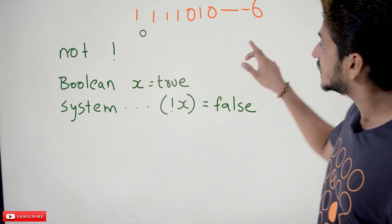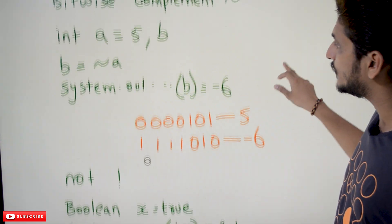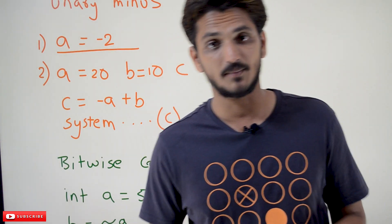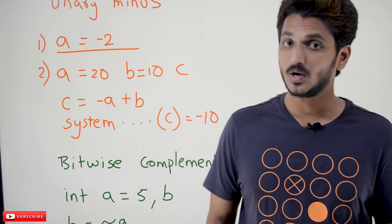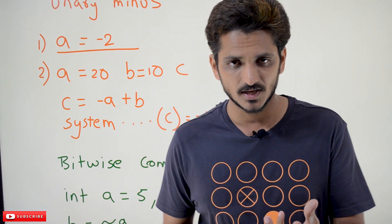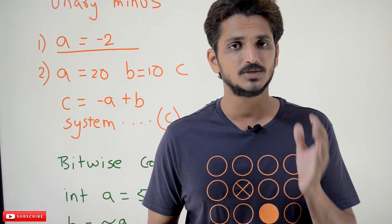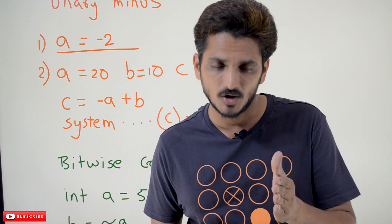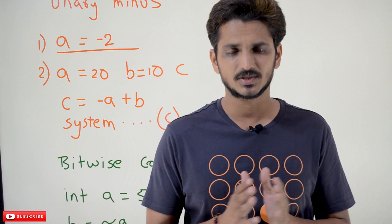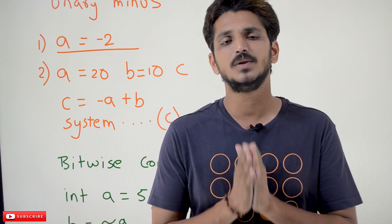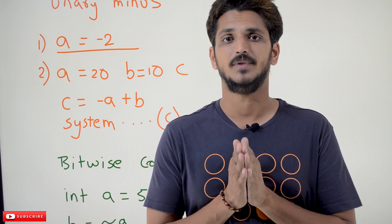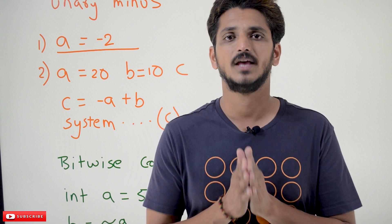These are the unary operators we use in Java programming. Hope you understand these examples. If you have any questions regarding the concept, please post your questions in the comment section below. Thanks for watching. If you haven't subscribed to our channel, please subscribe and press the bell icon for the latest updates. Thank you.